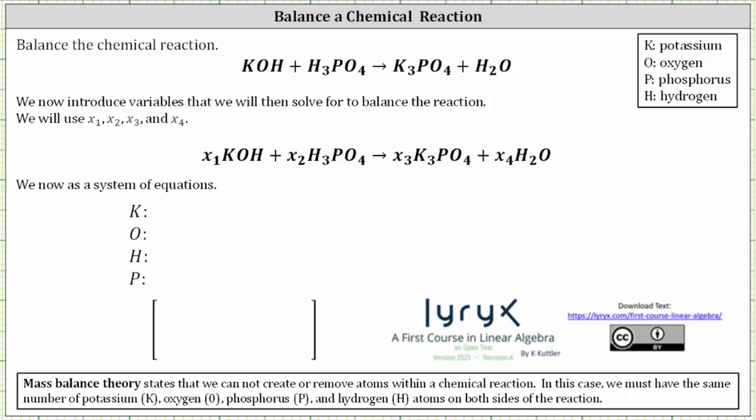We want to find the equations that balance the given chemical reaction. The mass balance theory states that we cannot create or remove atoms within a chemical reaction. We must have the same number of potassium, oxygen, phosphorus, and hydrogen atoms on both sides of the reaction. So because the reaction has four compounds total, we introduce four variables — x sub one through x sub four — which become the coefficients of each compound.